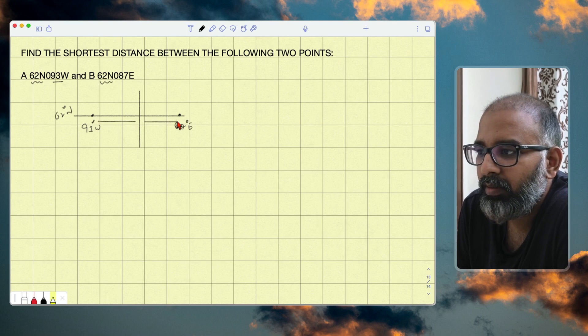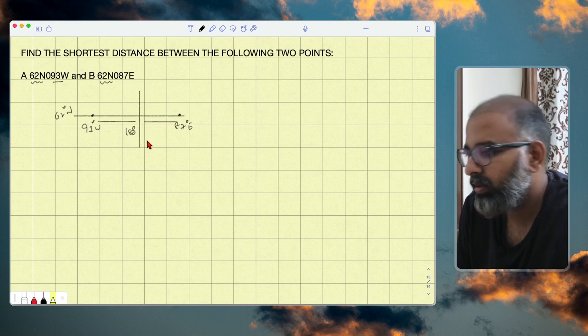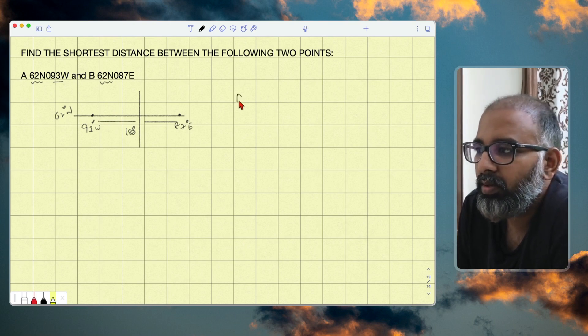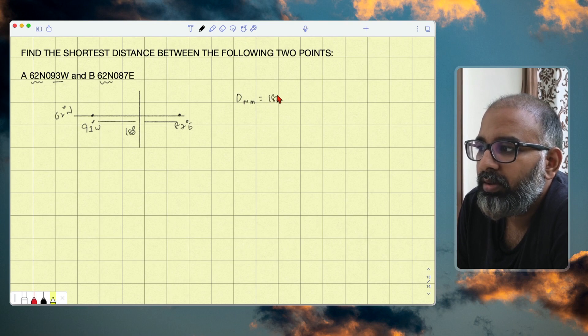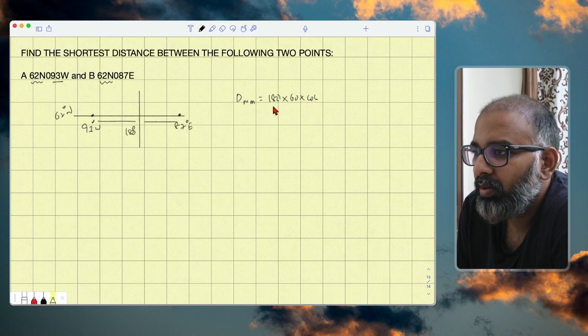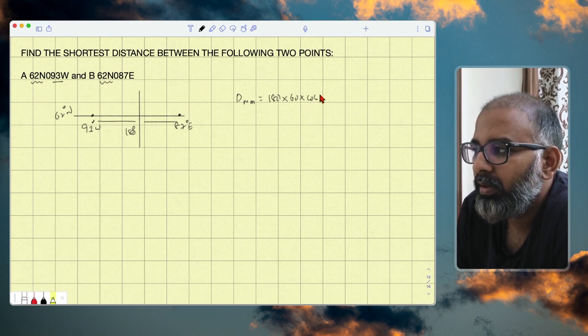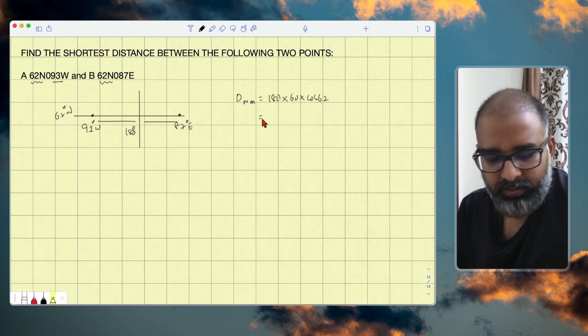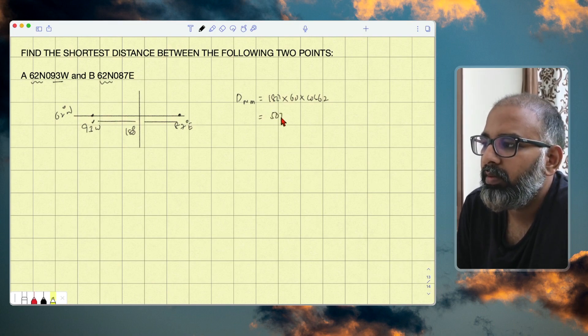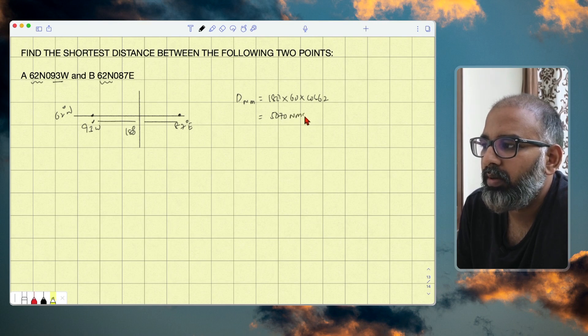Now this is 93, this is 87. If you add these, total will be 180 degrees, correct. Now along a parallel of latitude, the distance in nautical miles is chi long - that is how many degrees between them times 60 times cos of that latitude, for 62. If you do this, that will be 5070 nautical miles.